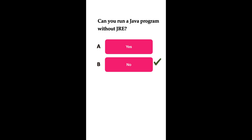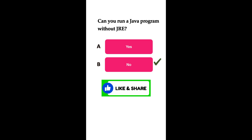The correct answer is No. You cannot run a Java program without JRE. JRE stands for Java Runtime Environment, and in order to run a Java program or application, you have to use JRE. JRE includes a JVM, core libraries, and other components necessary to run Java applications.